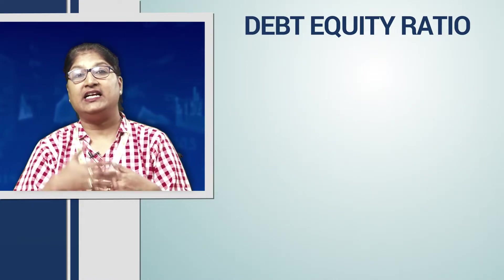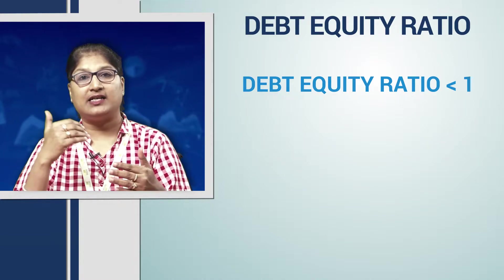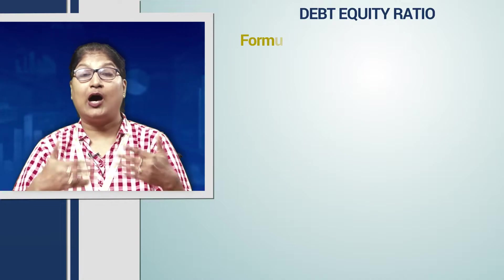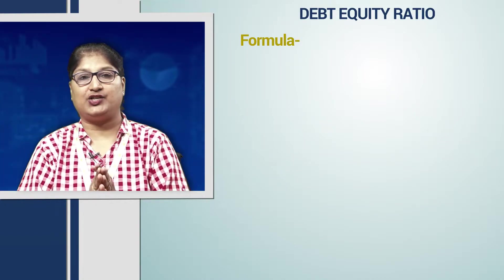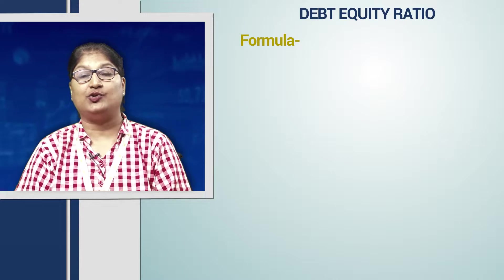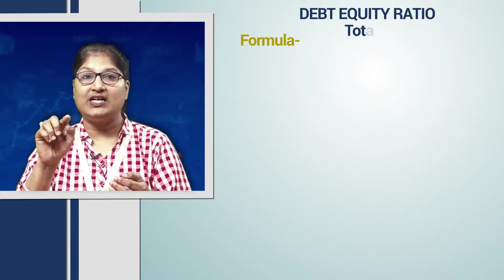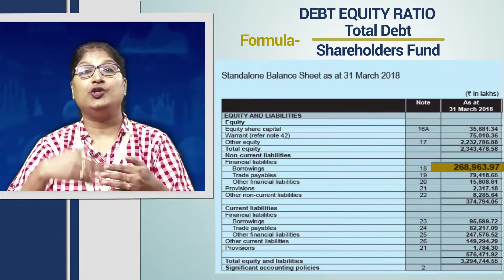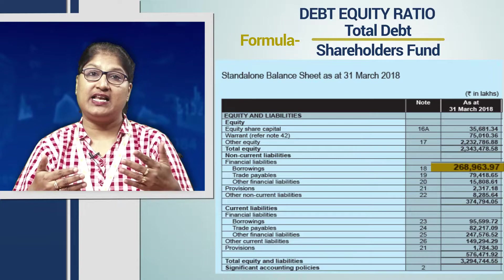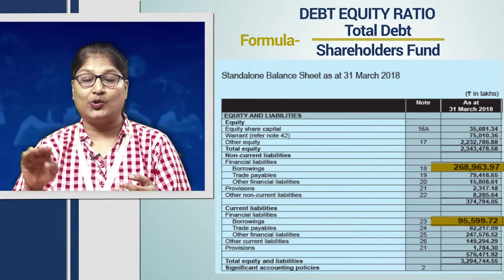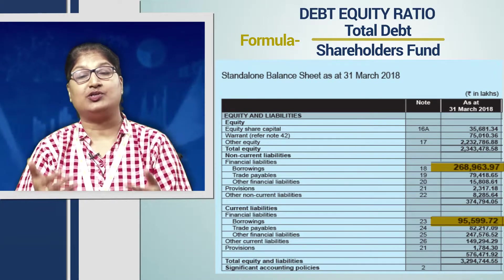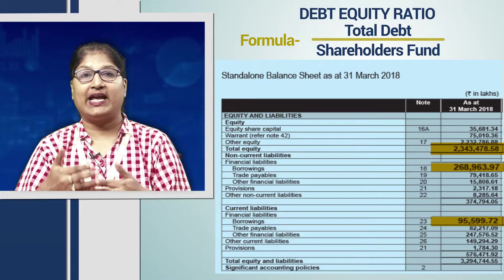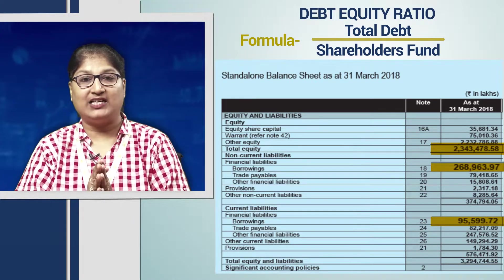It is normally said that a debt equity ratio below 1 is a good component for any company. For calculation of debt equity ratio, you have to divide total debt by the shareholders' fund or equity. Total debt includes your long-term borrowing as well as your short-term borrowing, and total equity includes owner's equity plus reserves and surplus. All these figures can be taken from the balance sheet.